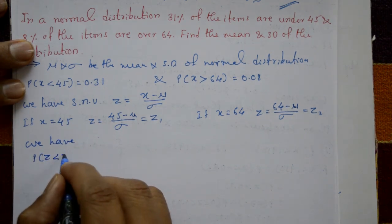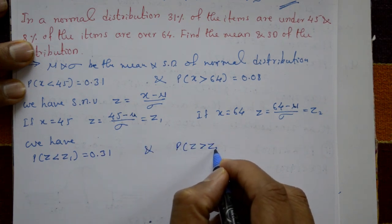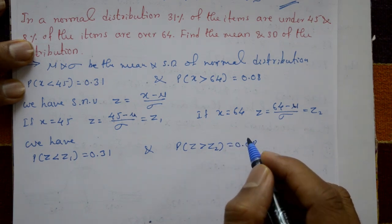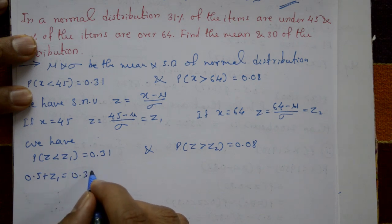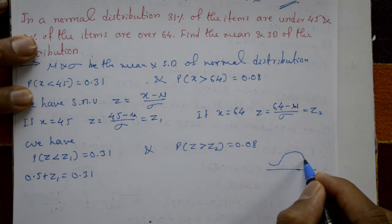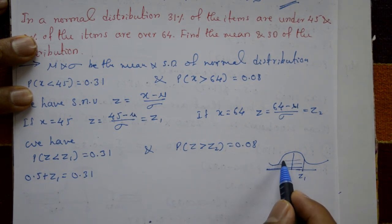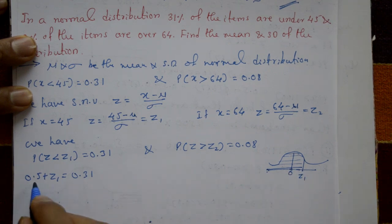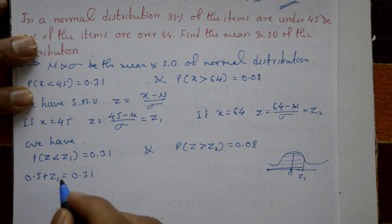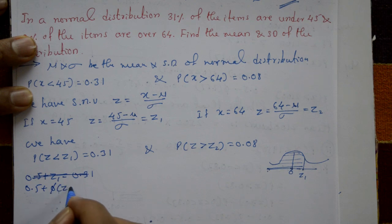Now, probability of Z less than Z1 is 0.31, and probability of Z greater than Z2 is 0.08. For the first condition, the diagram shows Z1 on the left side. The area is 0.5 plus phi of Z1 equals 0.31, which gives phi of Z1 equals 0.31 minus 0.5, that is minus 0.19.